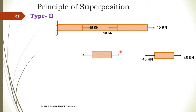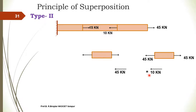Now for the second body — what should be the force on its right hand side? When we join the second and third body, we need the resultant force of 10 kN towards the left. But on the third body, the 45 kN force is already acting towards the left. So what should be the force on the right hand side of the second body?